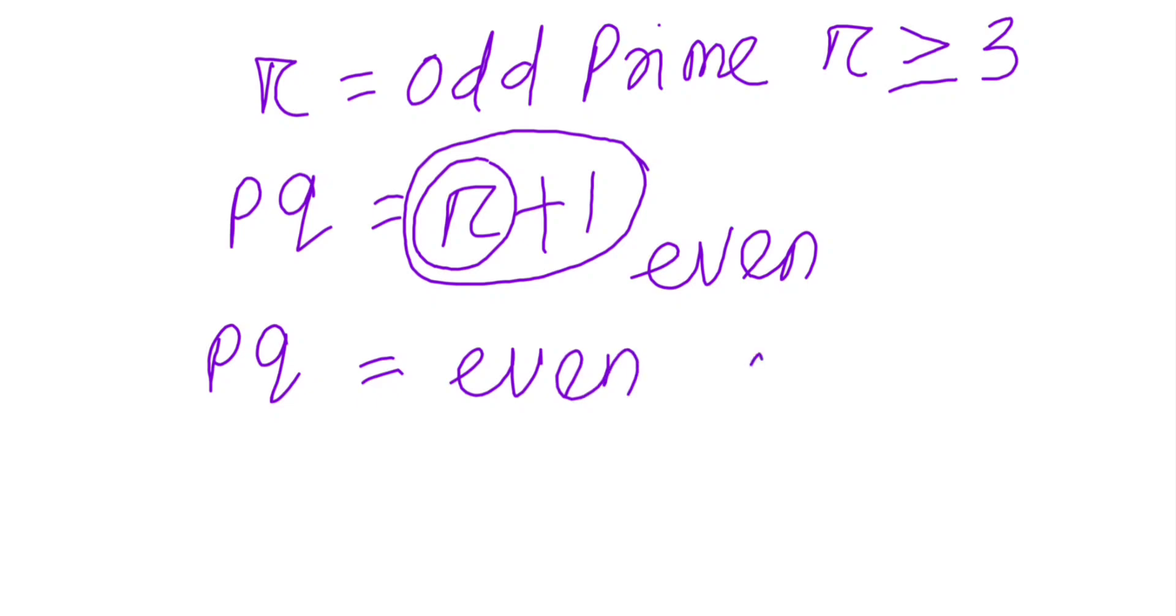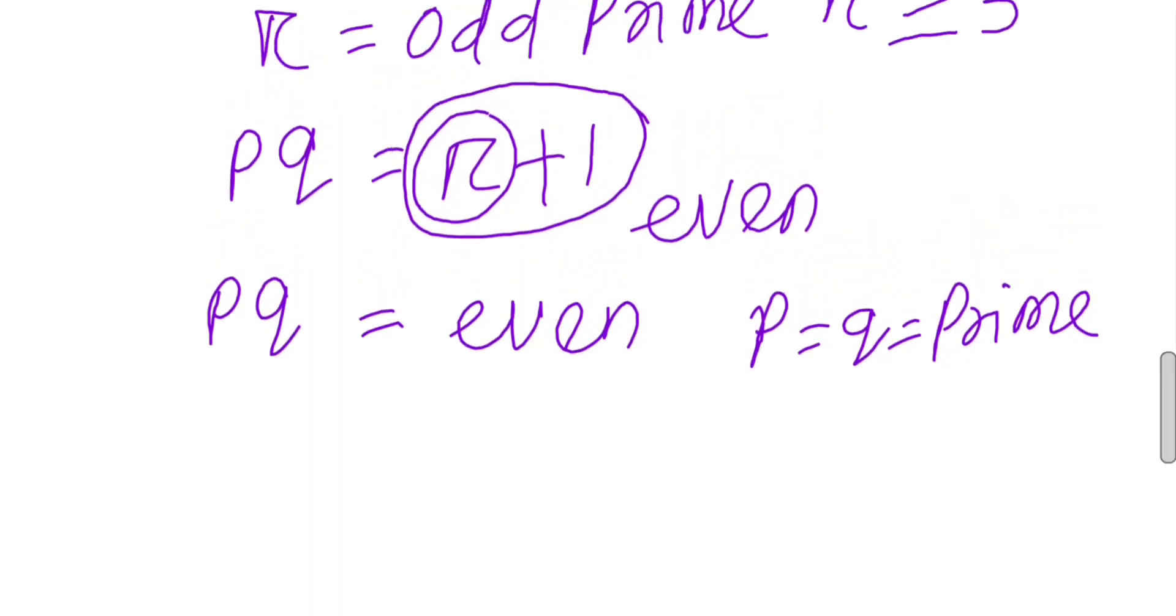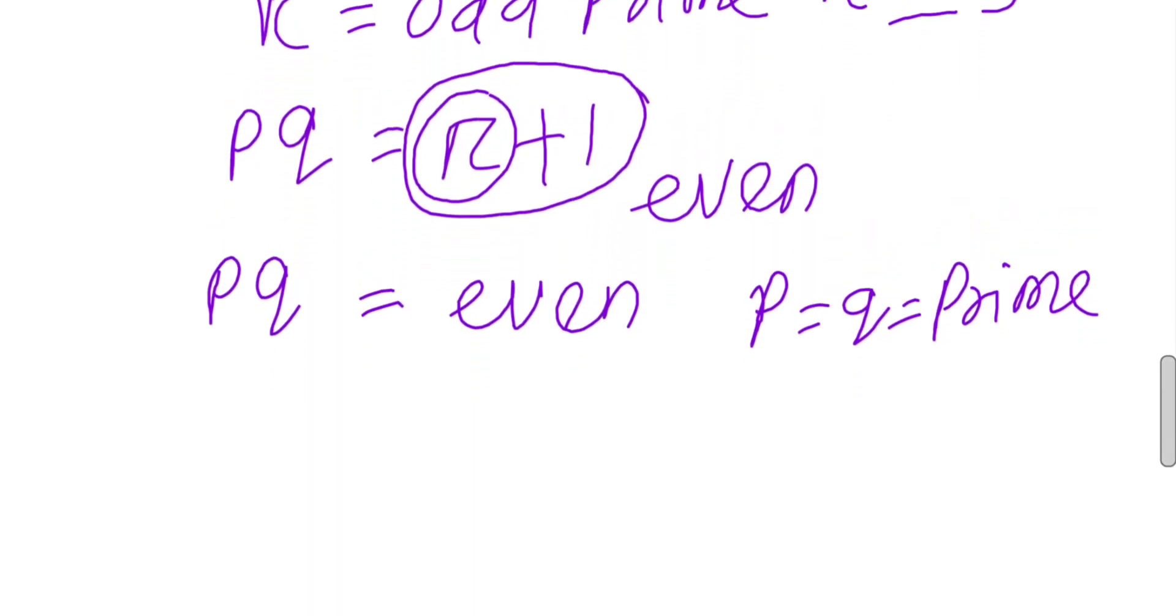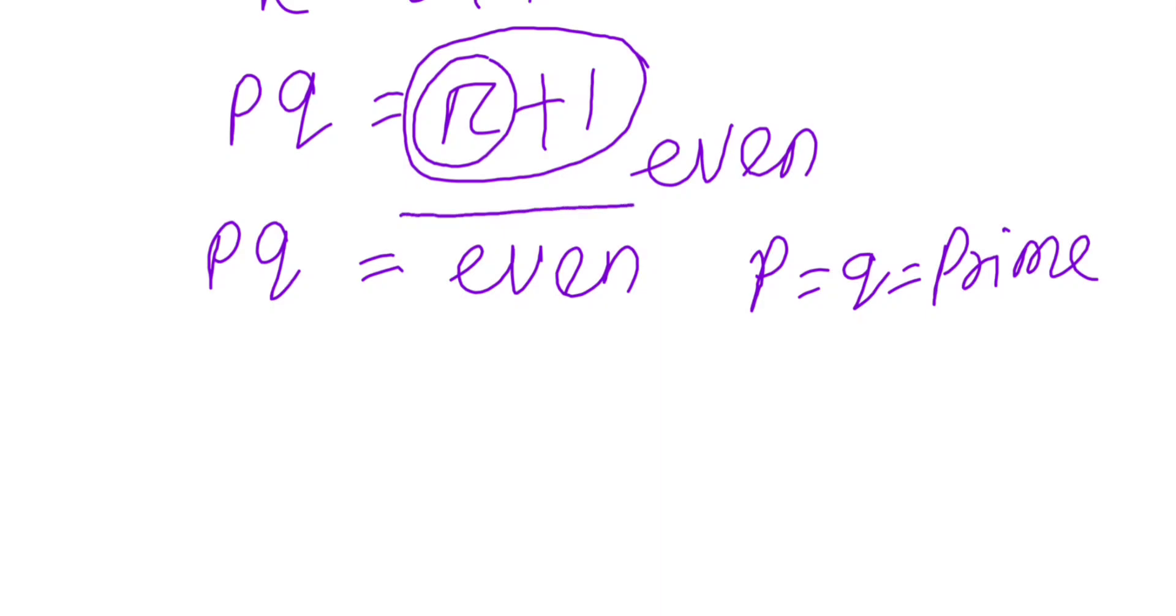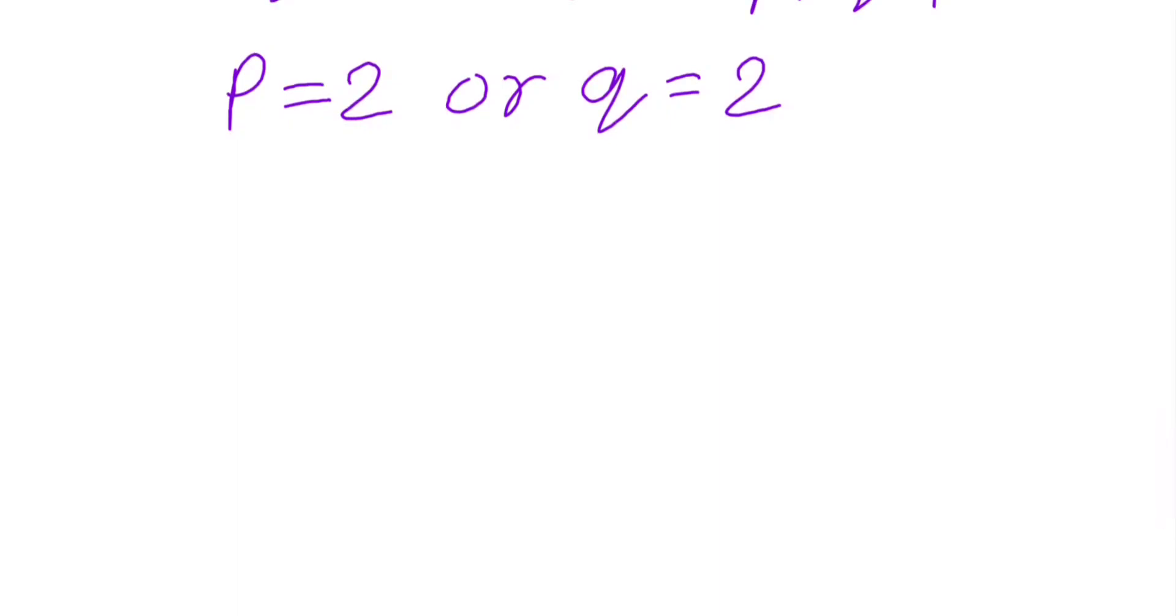And because both p and q are prime numbers, and because they are either even or odd, if this quantity is even, then because p and q both are prime numbers, one of them must be 2. So either p will be 2 or q will be 2. Due to symmetry of this equation, we can take either of them to be 2. So let's assume that p equals 2.